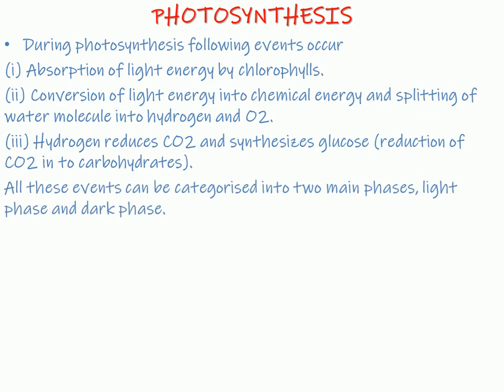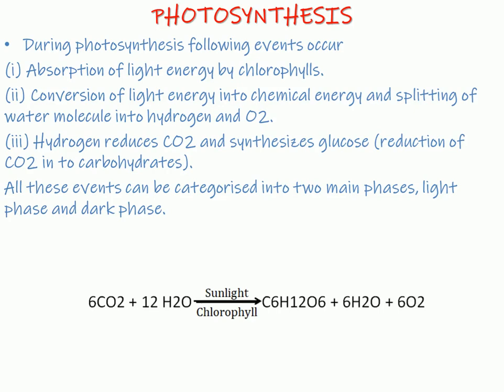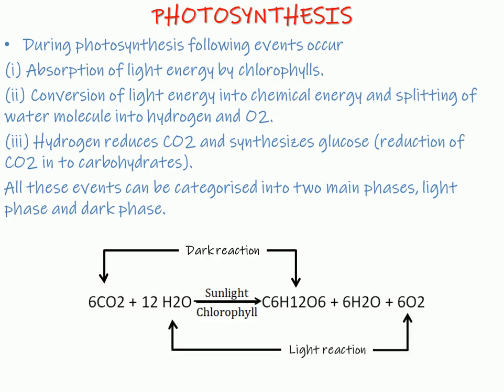All these events can be characterized into two main phases: the light phase and dark phase. The dark reaction is simply the conversion of carbon molecules into long chains of carbohydrates. The light reaction is the splitting of water molecule and release of oxygen gas in the presence of sunlight. Basically, photosynthesis is a mixture of light and dark reaction.